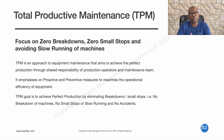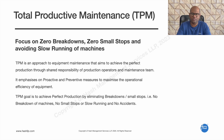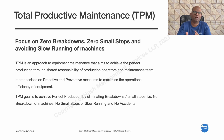TPM also focuses on avoiding slow running of machines. The machine has a rated speed, and we aim to maintain that RPM and achieve maximum potential. TPM is one of the lean tools, and maintenance is a core maintenance function.